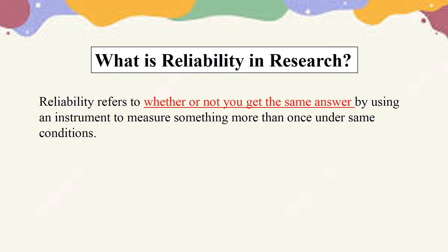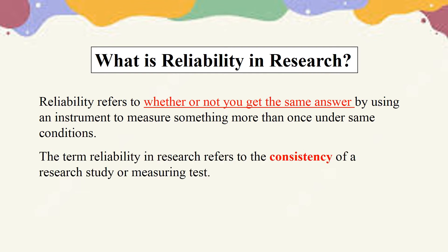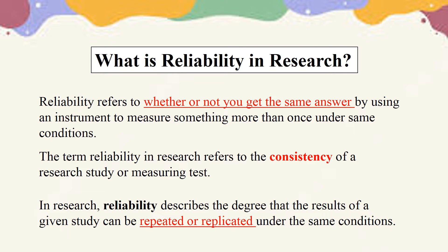Reliability refers to whether or not you get the same answer by using an instrument to measure something more than once under the same conditions. The term reliability in research refers to the consistency of a research study or measuring test. In research, reliability describes the degree that the results of a given study can be repeated or replicated under the same conditions.